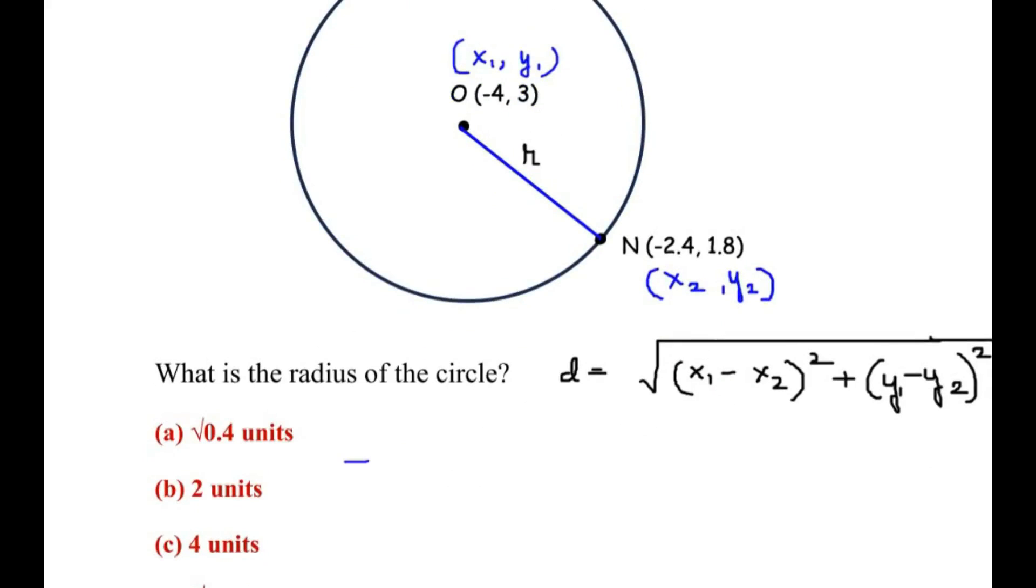So let us write here: distance or the radius equals square root of [x₁ is (-4) minus x₂ is (-2.4), so let me take it inside a bracket, minus 2.4, and then close the bracket and this is raised to the power of 2].